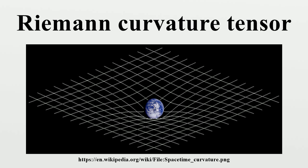It is a central mathematical tool in the theory of general relativity, the modern theory of gravity, and the curvature of spacetime is in principle observable via the geodesic deviation equation. The curvature tensor represents the tidal force experienced by a rigid body moving along a geodesic, in a sense made precise by the Jacobi equation.